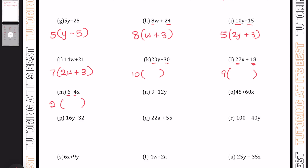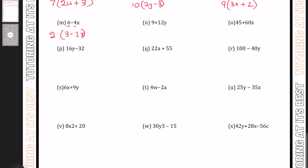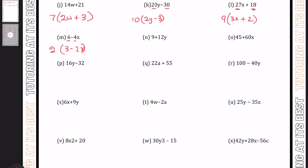Starting with K: we have 10 times 2, which is 20, then add the y — and 10 times minus 3 — giving us 10(2y − 3). Likewise for L, we have 9 times 3x plus 2, giving us 9(3x + 2). And moving to M, we have 2(3 − 2x). I'm going to give you the chance to showcase your mental prowess — pause the video, attempt all of these questions, and then follow the countdown to zero, where you will be shown all of the answers.